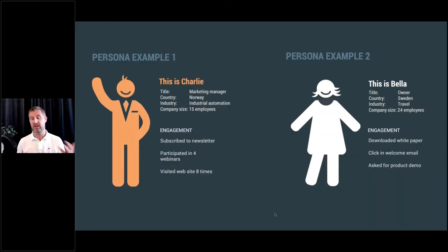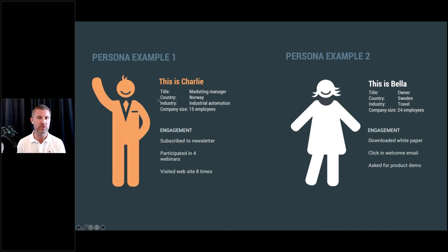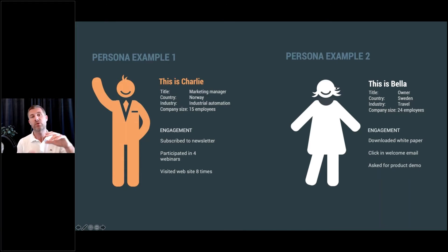What you could end up with is something like a persona model. You start building some typical characteristics you'd be looking at. For example, explicit scores like title — you'd look for marketing people in a specific country and industry. And then implicit scores: subscribing to a newsletter gives some points, participation in webinars gives points, and website visits give points. As you formulate these personas, it gives you an idea of what to put into your lead score sets. It's a pretty powerful tool, and it spills into a lot of areas in your marketing — like whether you have the correct marketing content for these personas.